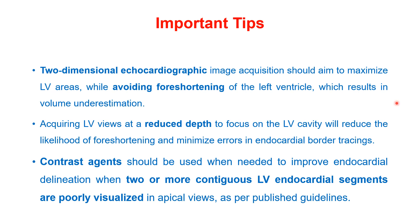Important tips: 2D echo image acquisition should aim to maximize the left ventricular area while avoiding foreshortening of the LV cavity, which results in volume underestimation. Acquiring the left ventricular views at a reduced depth to focus on the LV cavity will reduce the likelihood of foreshortening and minimize errors in endocardial border tracing. Contrast agents should be used when needed to improve endocardial delineation when two or more contiguous LV endocardial segments are poorly visualized in apical views, per published guidelines.